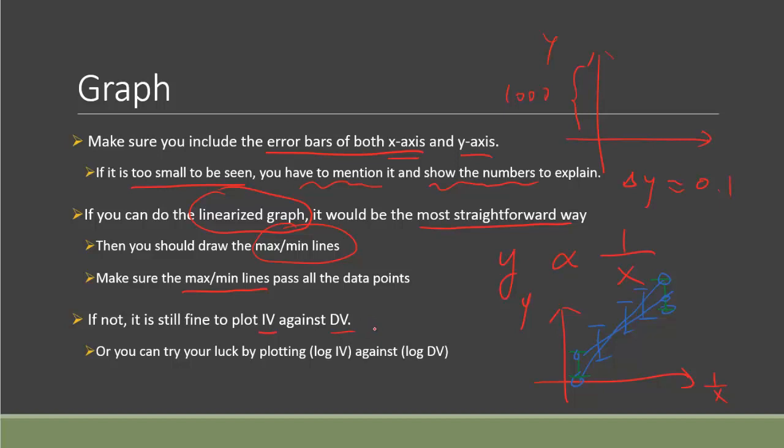In the case, if you really cannot linearize the equation and plot the graph, to be honest, this is still fine to plot the independent variable against the dependent variable. It may just be hard later on when you try to analyze the validity of your graph later on. If you don't know how to linearize it, you can try your luck by maybe plotting log of your independent variable against log function of the dependent variable. So if the true relationship is in power equation, that is y equals ax to the power of b, then you should be able to find a linear line. However, this may not be always the case. Then it won't work.